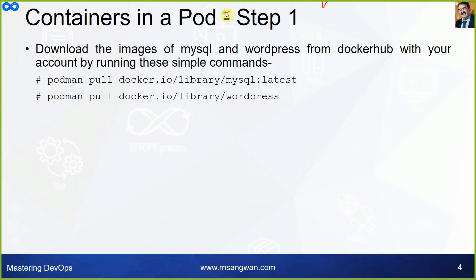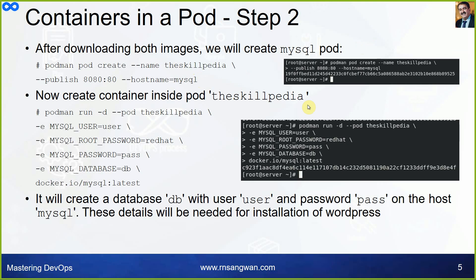The first step is to download images of MySQL and WordPress from Docker Hub. Run the commands: `podman pull docker.io/library/mysql:latest` and `podman pull docker.io/library/wordpress`. Pull these two images — you may already have the MySQL image from before.